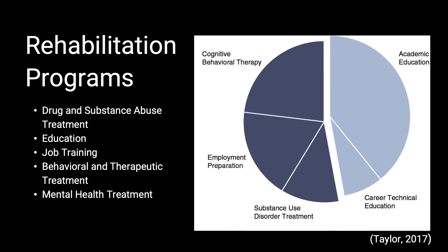Next, I'd like to go over a few rehabilitation programs. There are many different programs offered as rehabilitation services for inmates. Drug treatment is a common growing program offered to those who may suffer from substance abuse. A more general program revolves around education, where many prisons offer inmates a chance to continue growing their education through school-like programs. Next is job-specific training programs that allow inmates to prepare for jobs they may qualify for upon release. Behavioral and therapeutic rehabilitation services help inmates who may be suffering physically, psychologically, or socially. Lastly, mental health treatment programs are growing across America as this is becoming a bigger focus.